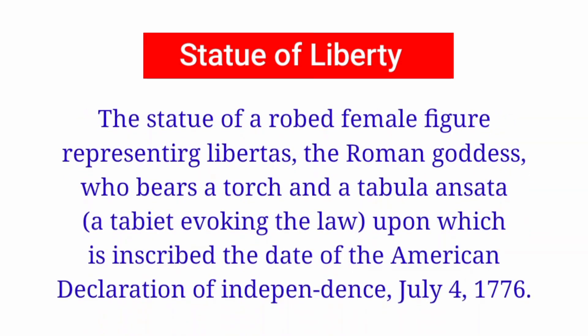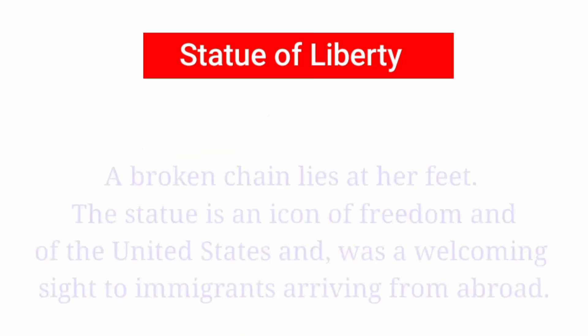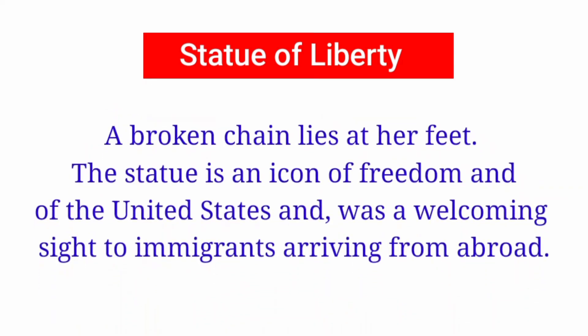The statue of the robed female figure represents Libertas, the Roman goddess, who bears a torch and a tabula ansata, a tablet evoking the law, upon which is inscribed the date of the American Declaration of Independence, July 4, 1776.